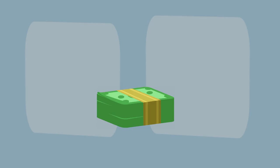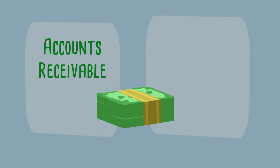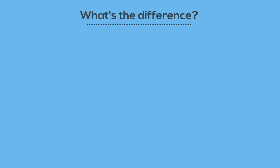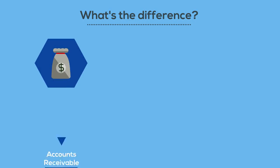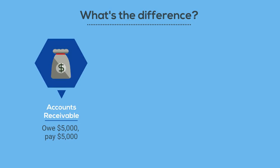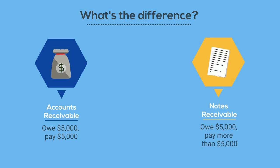We're familiar with people owing us money — the account we've used most often for that is accounts receivable. However, there is another receivable account that may be used: notes receivable. What's the difference? They're both used when someone owes us money, but if someone owes us five thousand dollars in accounts receivable, they'll pay us five thousand dollars. If someone owes us five thousand dollars in notes receivable, they will pay us more than five thousand dollars. The difference is interest.